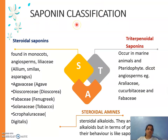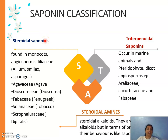Let us go into the classification of saponins. They are classified into two important parts: first, steroidal saponins, and second, triterpenoidal saponins. We saw this classification in the first year, where we also studied the chemical test that differentiates steroidal from triterpenoidal saponins — the Libermann-Burchard's test, which contains acetic anhydride and sulfuric acid. When the aglycone is treated with acetic anhydride plus H₂SO₄, steroidal saponins turn green and triterpenoidal saponins turn pinkish or red.